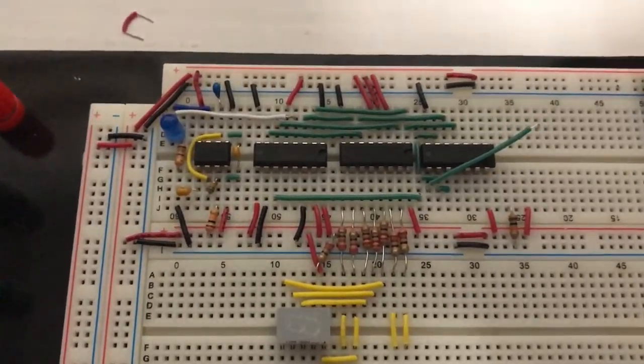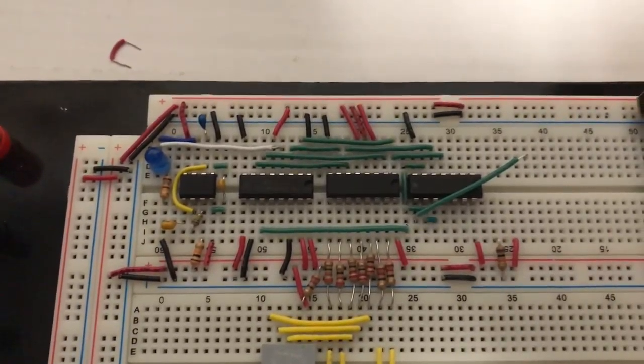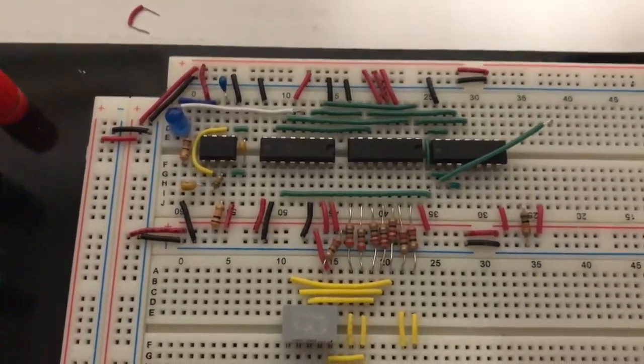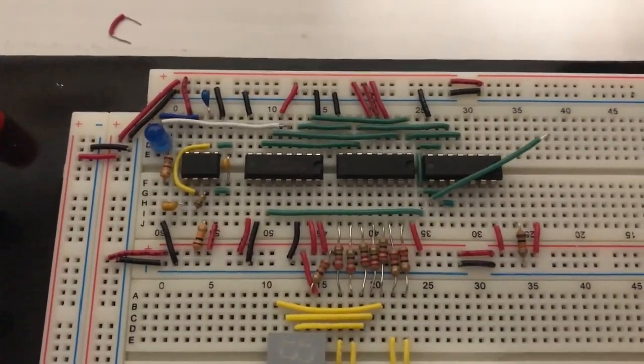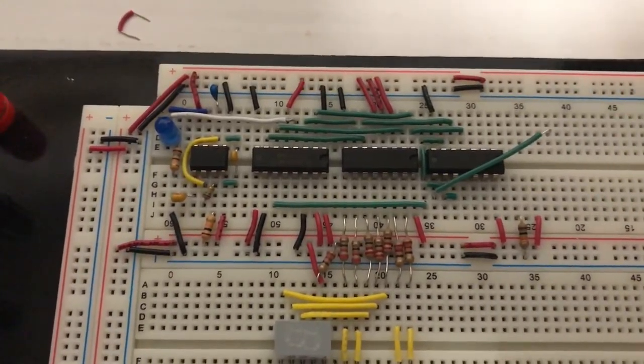So it'll count down from 9 to 0, and then when it reaches 15, it won't go to 15, it'll reset back to 9. So now this will be a downwards decade counter that'll count from 9 down to 0, then back to 9.